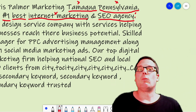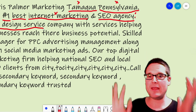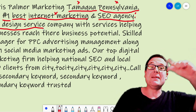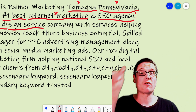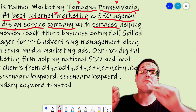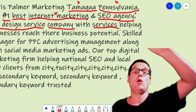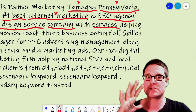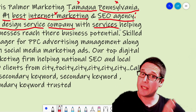Then we have 'web design service' — a secondary keyword. I put 'service' and then 'company,' and then 'services' — that's a different search. So: web design services, web design service, web design company, web design service company. You see how I've gotten all of the variations? These are variations of secondary keywords and they're very important — I like to include all the variations.